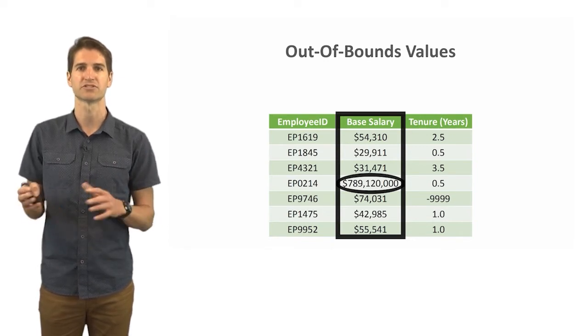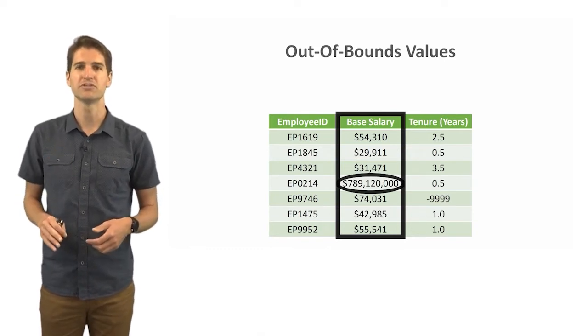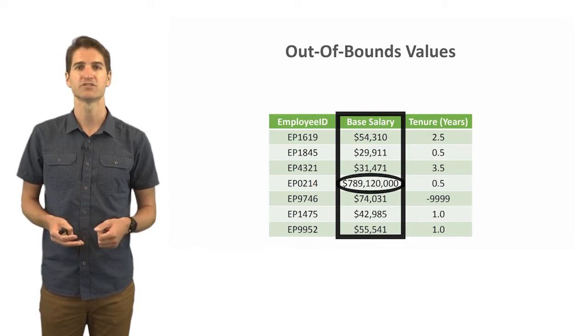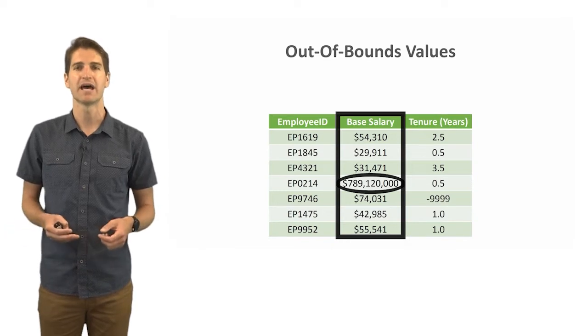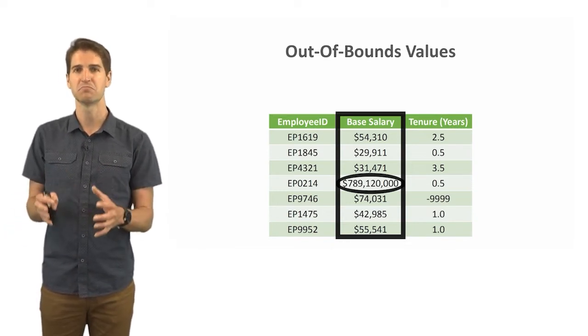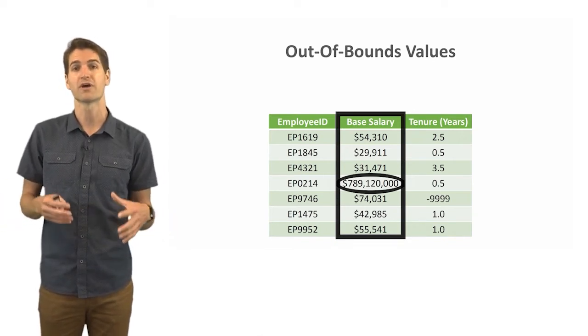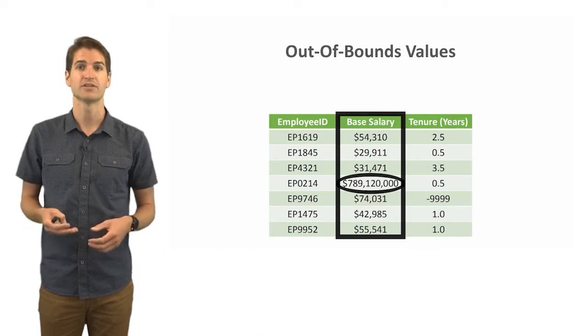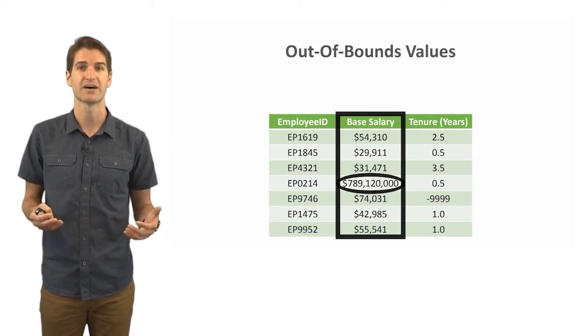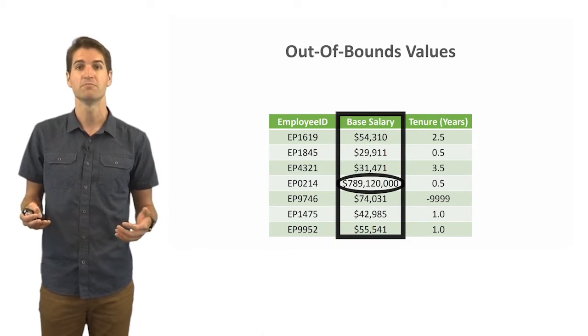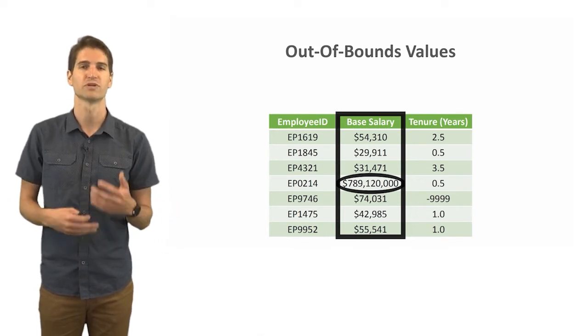Notice in the base salary column or variable that we have your standard salaries ranging from $54,310 to $55,541 in the very last row. But do note that we do have one entry here that is for $789,120,000. Based on what you know about the company, this might be either just an outlier, perhaps this is just a really well-paid CEO, or perhaps more than likely this is a data entry error. There's a number of zeros at the end of this and it could be that this is really supposed to be $78,912 but someone added on four zeros by mistake when entering the data. So this would be something you'd want to go through and clean up.